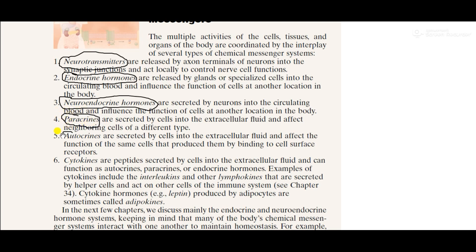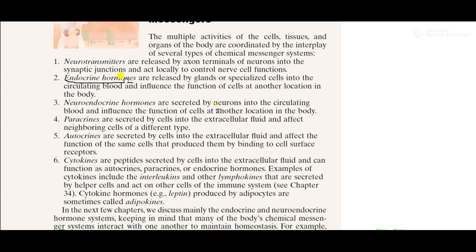There are several types of chemical messenger systems in the body: neurotransmitters, endocrine hormones, neuroendocrine hormones, paracrine, autocrine, and cytokines. Neurotransmitters are released by axon terminals of neurons into the synaptic junctions and act locally to control nerve cell functions.